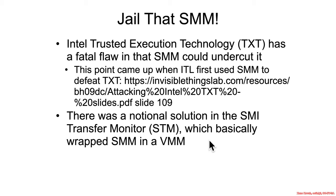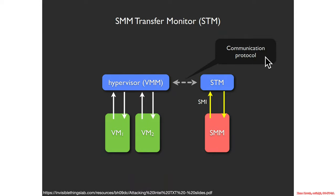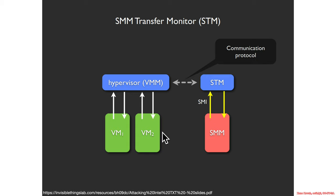SMI Transfer Monitor is basically jailing SMM inside of a VMM. This was first brought to light when Invisible Things Lab started attacking Intel Trusted Execution Technology - they found that if they broke into SMM, they could automatically and guaranteed defeat the security guarantees of TXT. Intel told them the solution was a thing called the STM, SMM Transfer Monitor. The idea: take a virtual machine management system and wrap SMM in it, then negotiate with the VMM about what areas of memory are restricted.